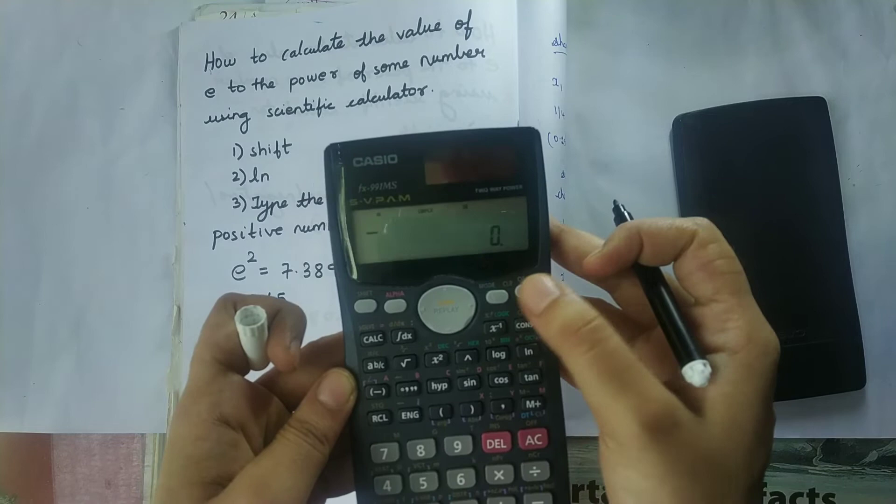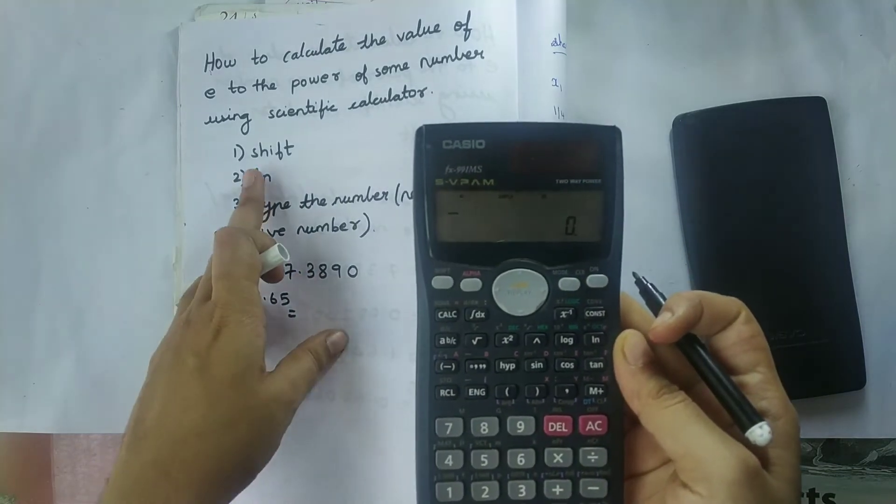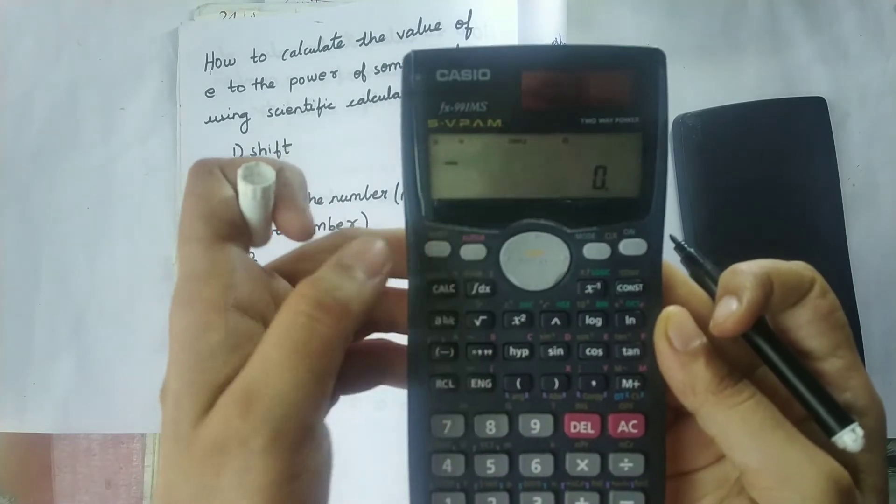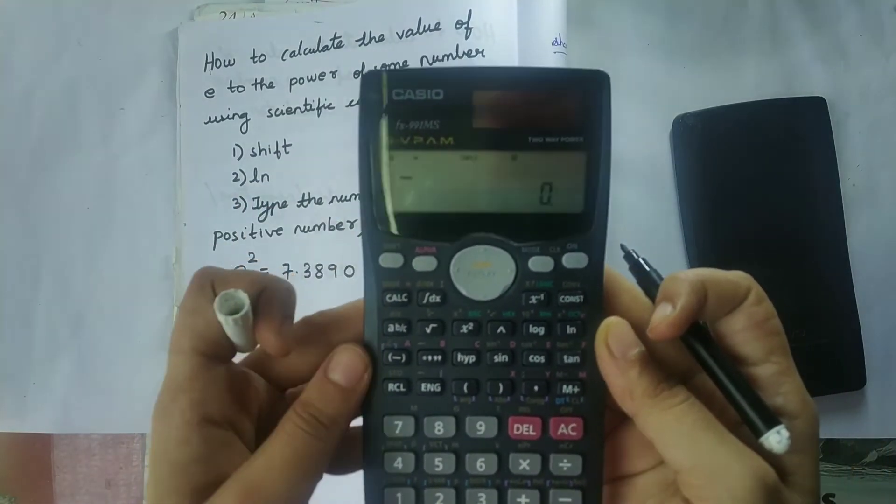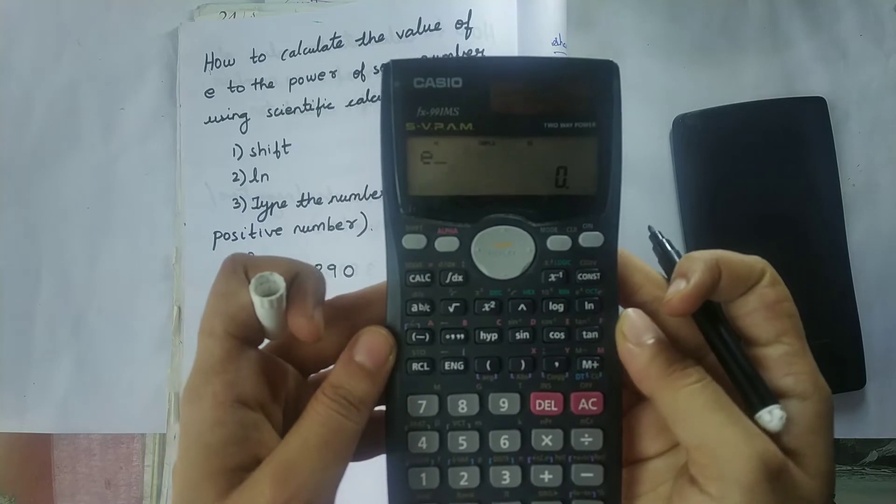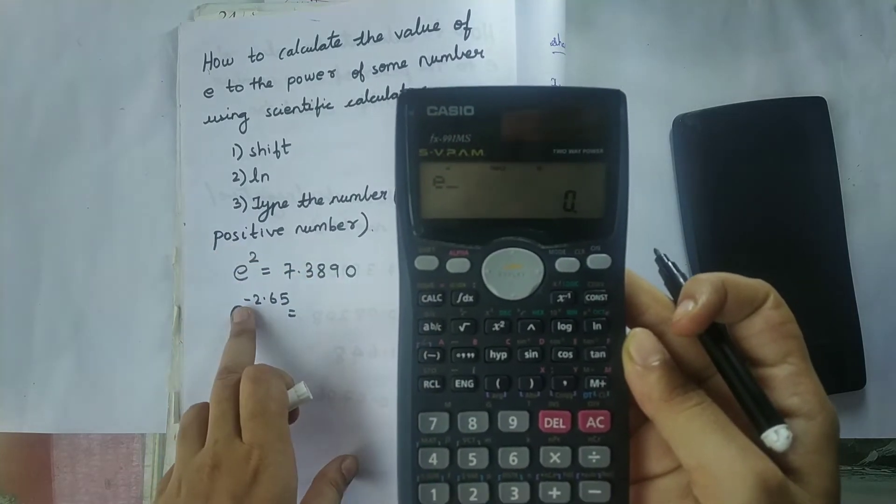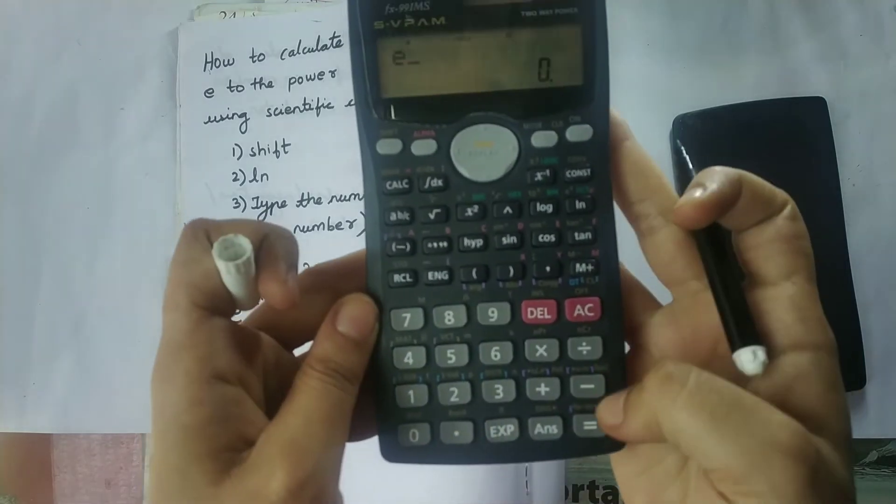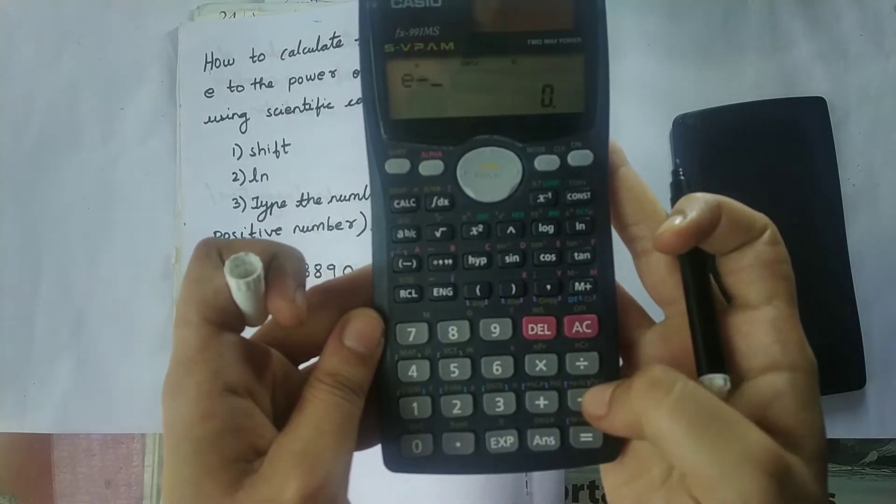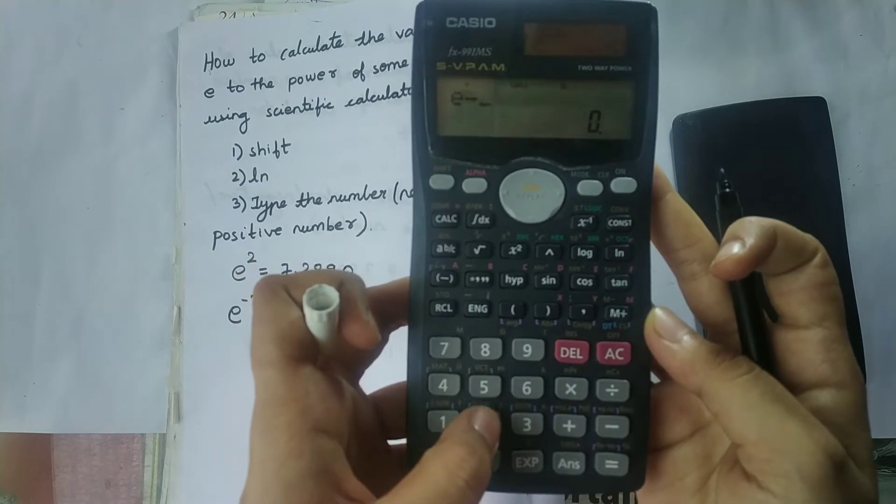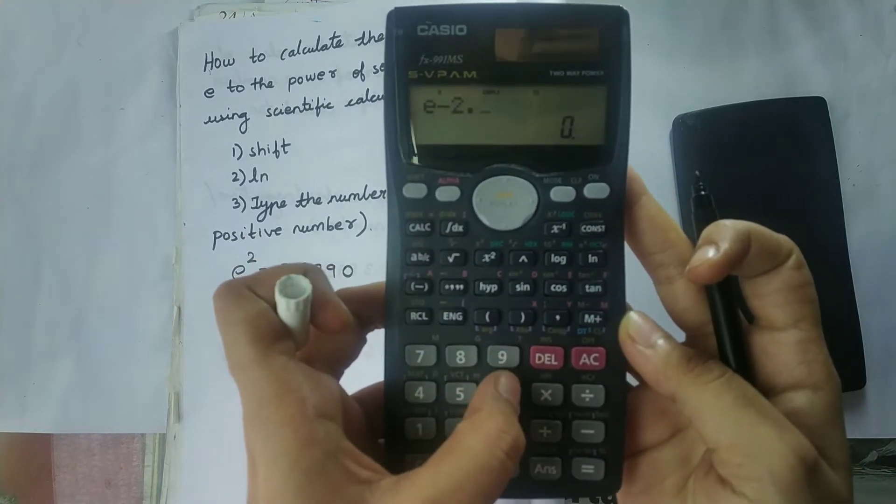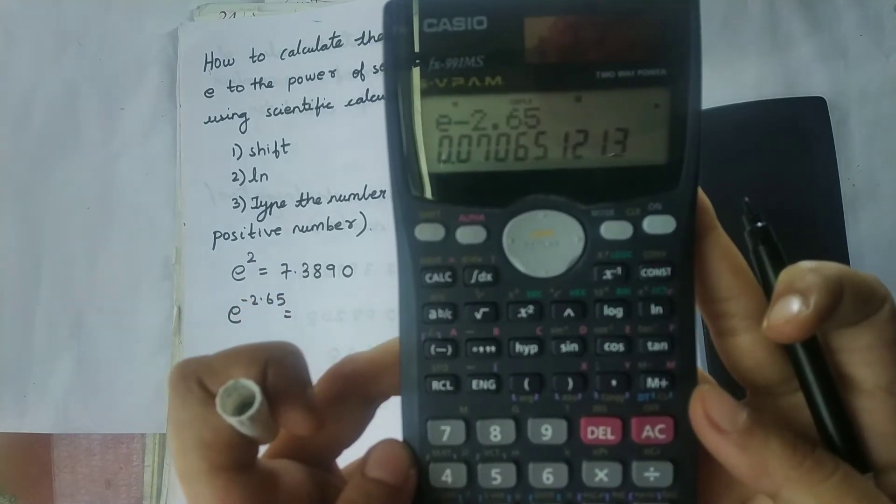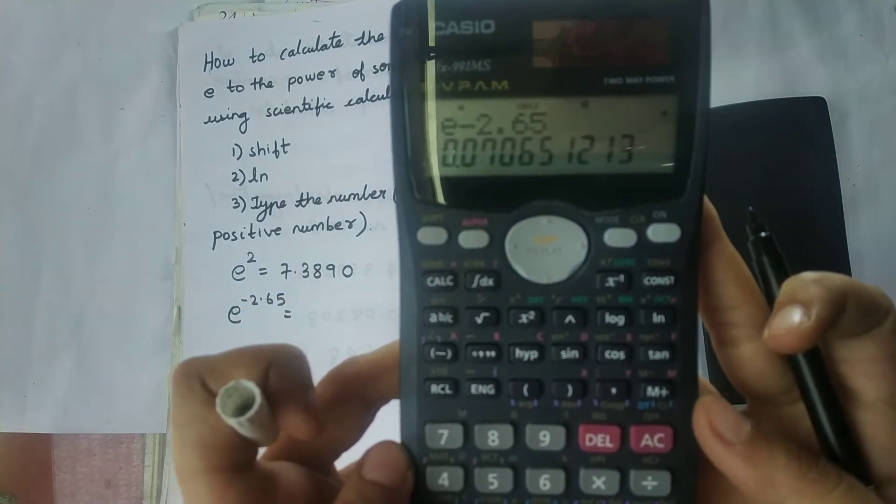So now I am going to clear everything. So the first step is I should press the shift key. Second step is I should press LN key. Third, I should type the number. So here the number is minus 2.65. So first I should click on the minus sign, then the number 2.65, then equal to button. So the answer is 0.07065.